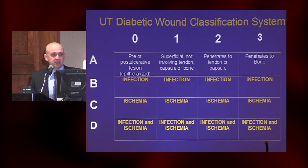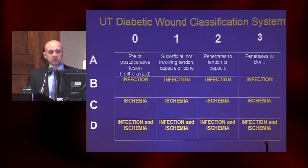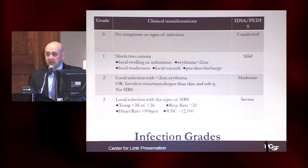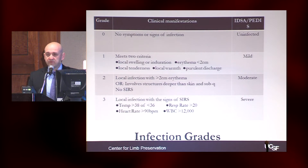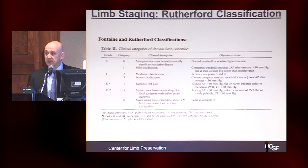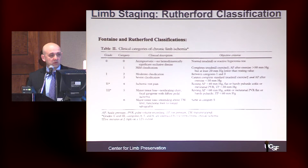The pitfalls of this classification system: it doesn't adequately describe the severity of the infection — the difference between a localized infection versus sepsis. It doesn't adequately describe the severity of ischemia, such as a toe pressure of 70 versus a toe pressure of 20. The Infectious Disease Society of America also has a classification system discussing types of infections, with grade zero being no symptoms and grade three being a local infection with sepsis.